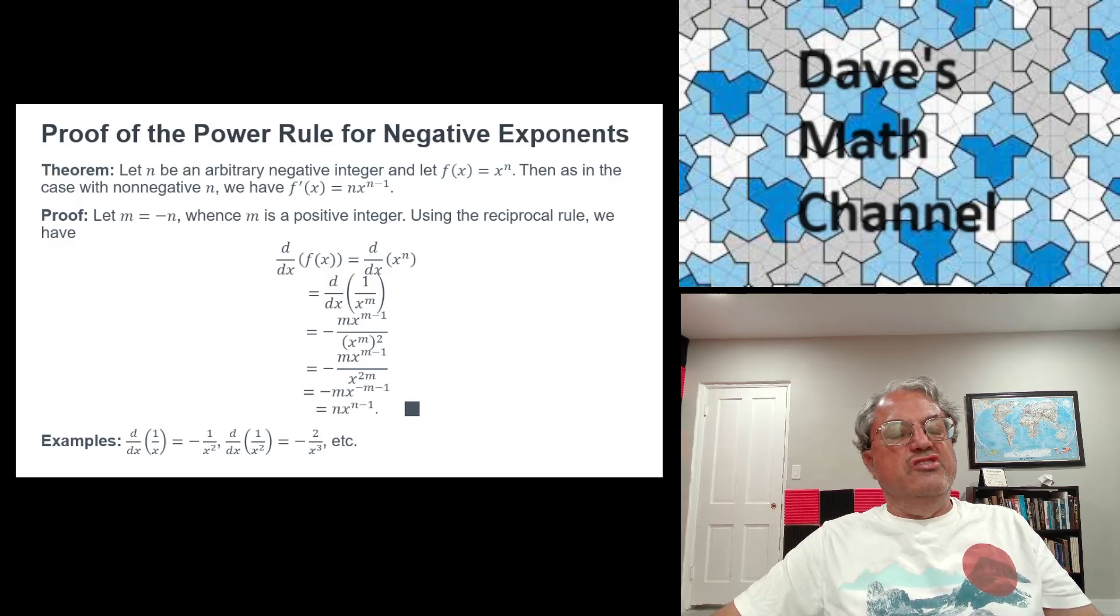We know how to calculate derivatives of reciprocals using the reciprocal rule, which I covered a few lessons ago. It's a special case of the quotient rule. The reciprocal rule says that the derivative of 1/f(x) for an arbitrary differentiable function f(x) is equal to -f'(x)/[f(x)]^2. Remember that rule—it's pretty easy to memorize.